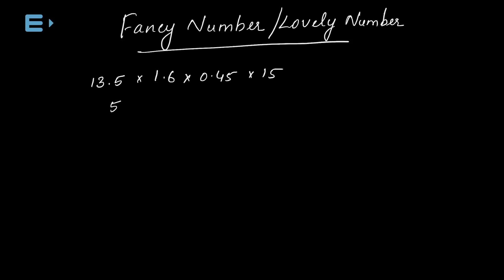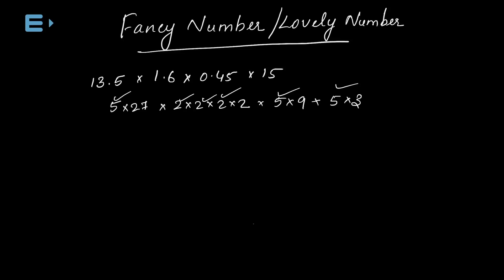This is 5 × 27. That is why we consider decimal points. We consider 16 as 2 × 2 × 2. Then 45 is 5 × 9. 15 is 5 × 3. We start factorization. Now, 5 × 5 is 25, and 3 × 2 means 5 × 2, giving us 10. 10 × 10 means 100, and 10 × 1000.